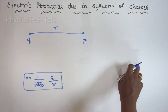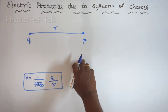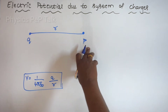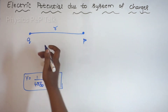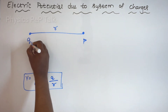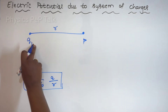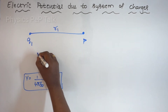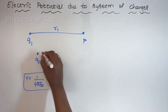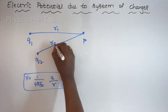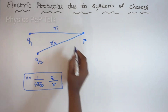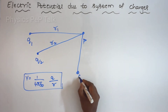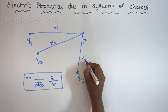For a system of charges, there is more than one charge in the system. Because of all this collection of charges, what is the electric potential at point P? Let me call this charge as Q1, and the distance of separation between charge Q1 and point P, I will call it as R1. Another charge, let me call this as Q2, and the distance of separation as R2. Another charge, I will call this as Q3.